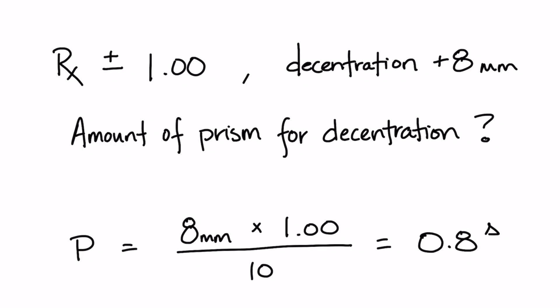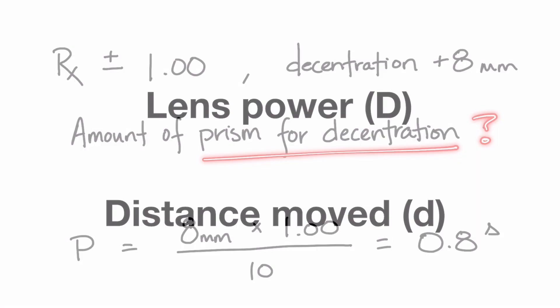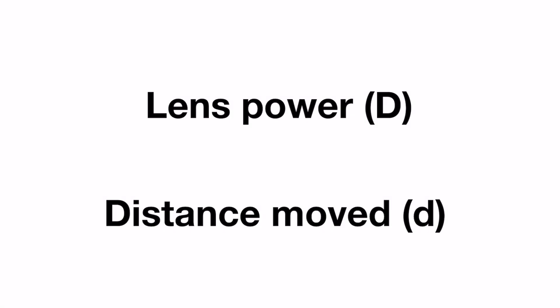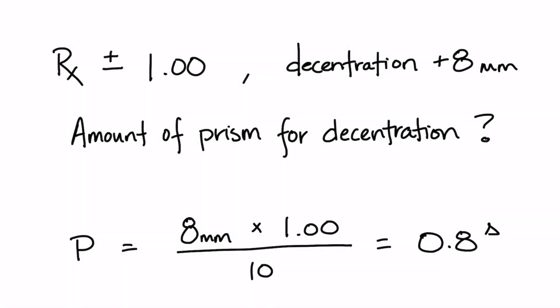Now let's look at an example of how to calculate the prism and determine the base direction at the blank geometric center. Remember, to calculate the required prism for decentration, you'll need to know two things: the power of the lens and the distance we want to move the OC. Let's take a look at a one diopter spherical lens power that needs 8 millimeters of decentration on the blank. The plus in front of the 8 lets us know that the 8 millimeters of decentration will be in towards the nose.